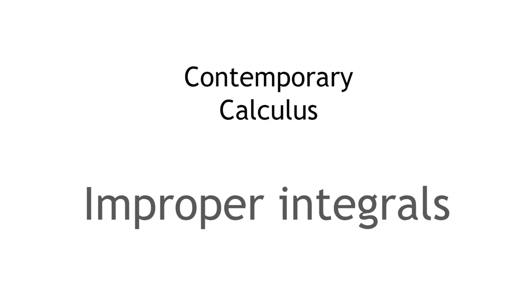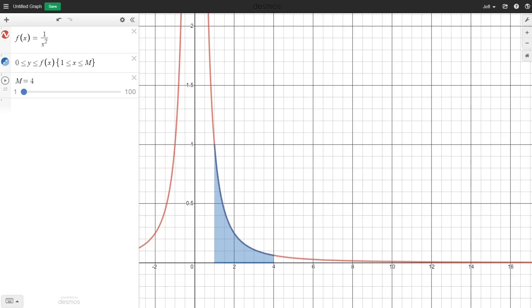Here's a graph of the function 1 over x squared. We know how to find the area under the curve and above the x-axis between x equals 1 and x equals 4.